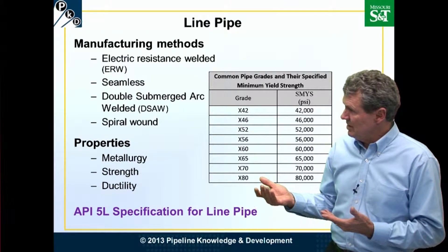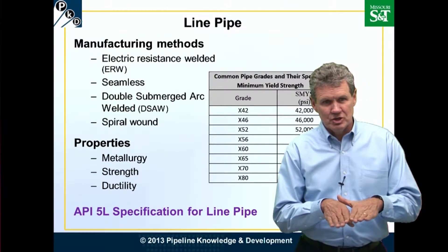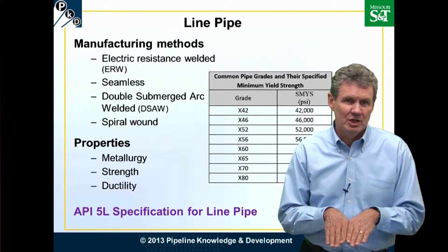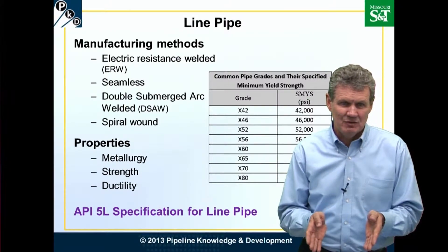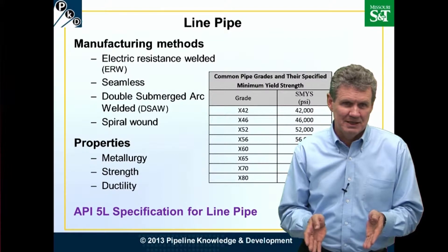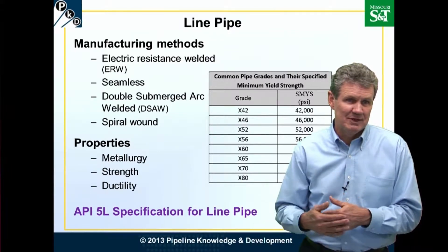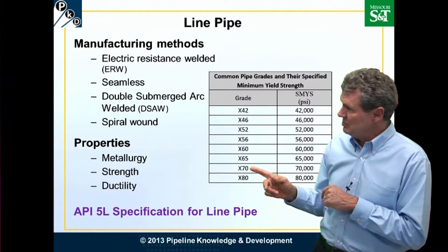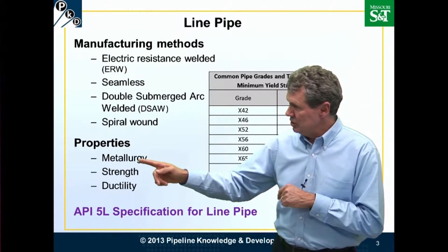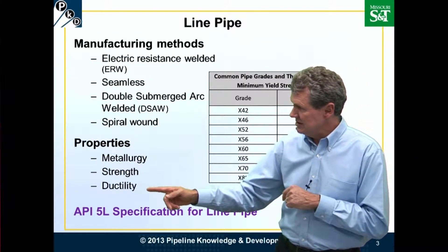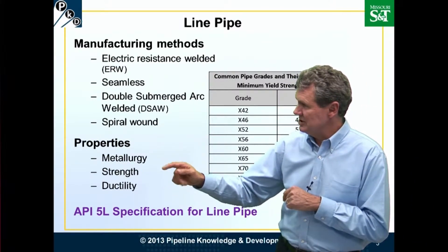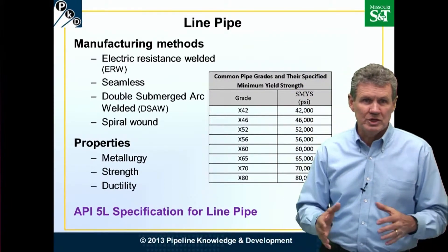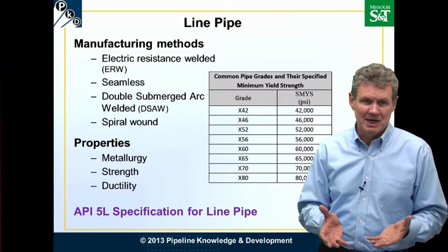Whenever you think about rolling it up, you've got two edges to join. How we join those edges helps to determine what the manufacturing method is, or what name we give it. With respect to properties — metallurgy, strength, and ductility — these are primarily set by the steel before we start working with it to make it into pipe.